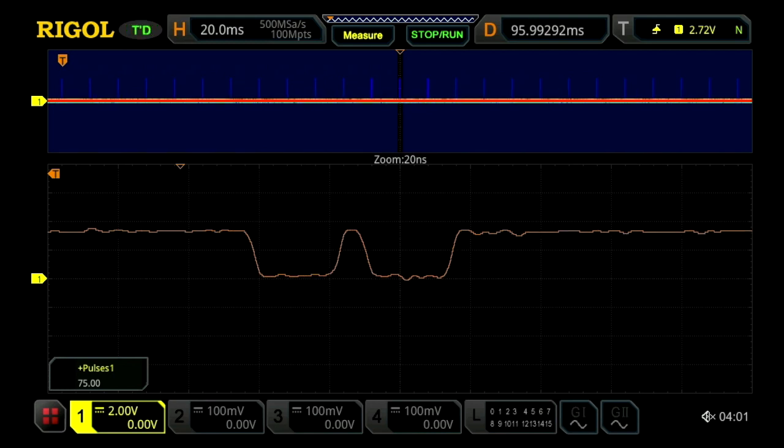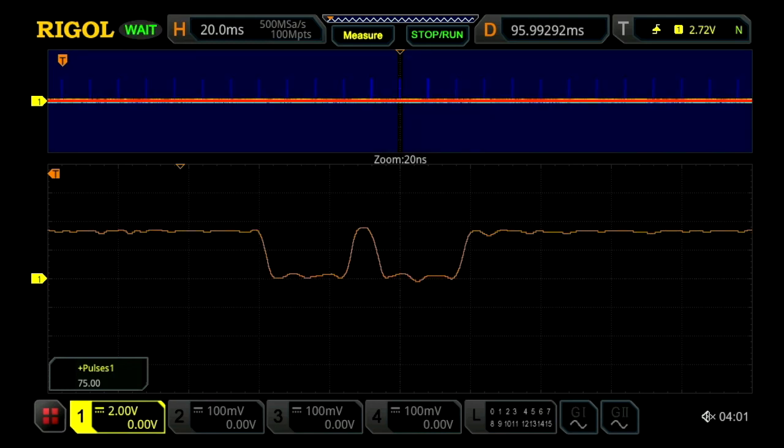That's the memory depth that really enables you to see that detail even when you're zoomed out to milliseconds per division. That's really the advantage of the memory depth on the MSO-5000 series oscilloscope.